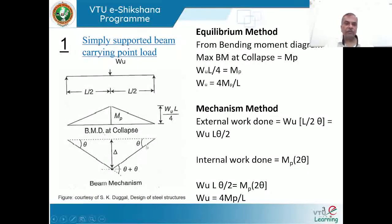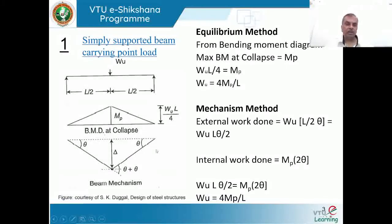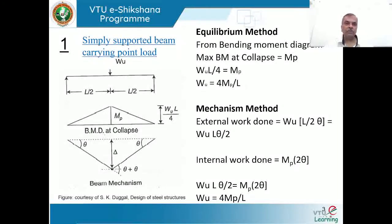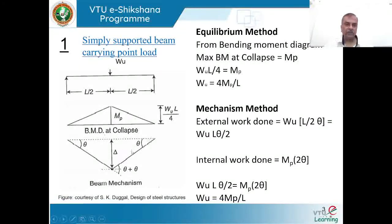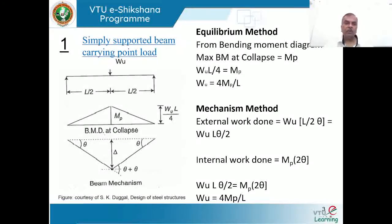The mechanism for the simply supported beam has two mechanical hinges at the supports, which rotate as load increases. When load W becomes maximum, one plastic hinge forms exactly at the center where the load is acting. With two mechanical hinges and one plastic hinge of capacity mp, the beam transforms into a mechanism.